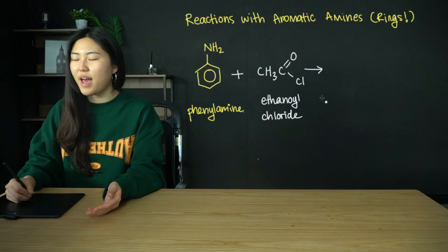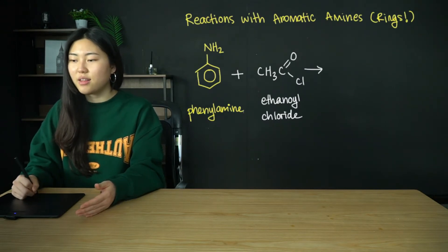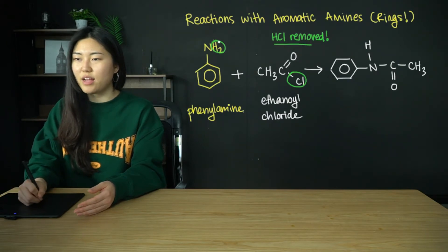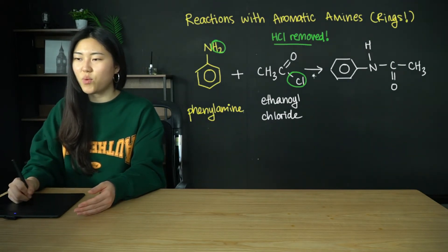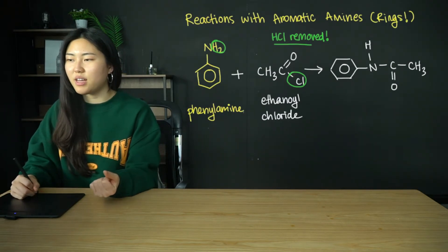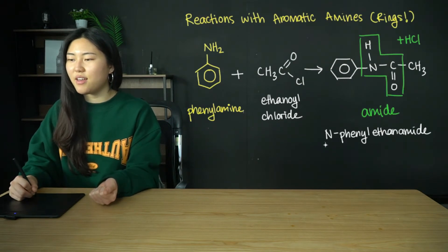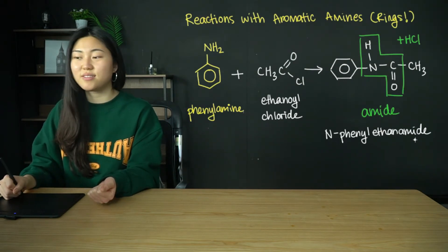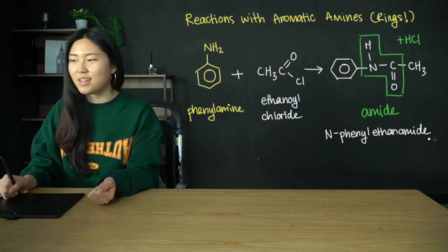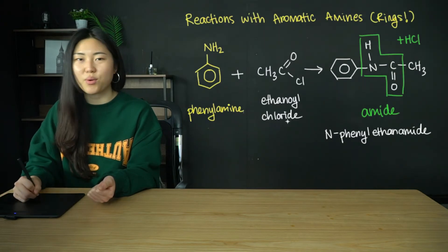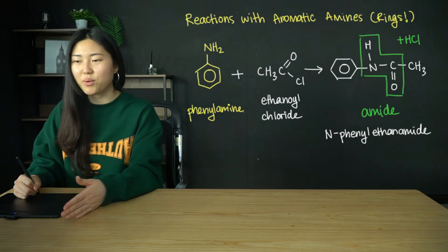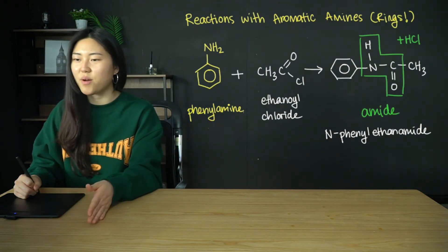If we use ethanoyl chloride, an amide bond forms by removing one H from the NH2 and one Cl from the chloride group. The amide bond has formed — it's N-phenyl ethanamide because on the nitrogen we have the phenyl group, and ethanamide because we used the ethanoyl chloride. So an amide bond forms from the ethanoyl chloride and the amine group on the phenylamine.